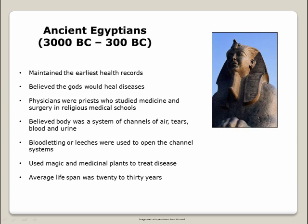Ancient Egyptians, 3,000 B.C. to 300 B.C. The ancient Egyptians were the first to maintain health records. They believed the gods would heal diseases. Physicians were priests who studied medicine and surgery in religious medical schools. The ancient Egyptians believed the body was a system of channels for air, tears, blood, and urine. Bloodletting or leeches were used to open those channels. Magic and medicinal plants were also used to treat disease. The average lifespan was 20 to 30 years.